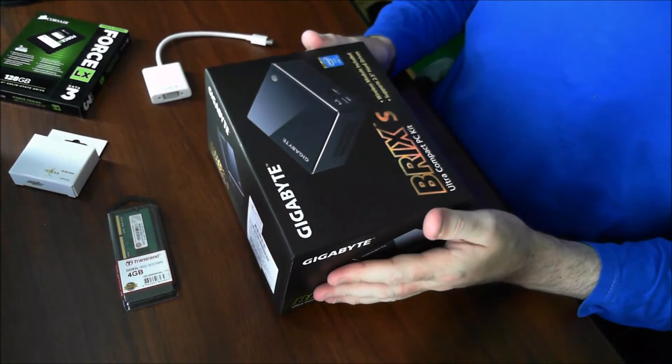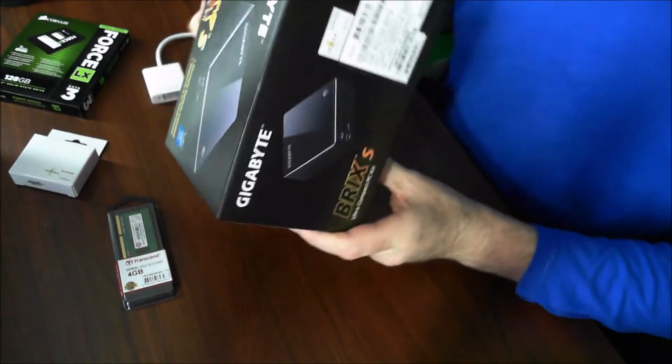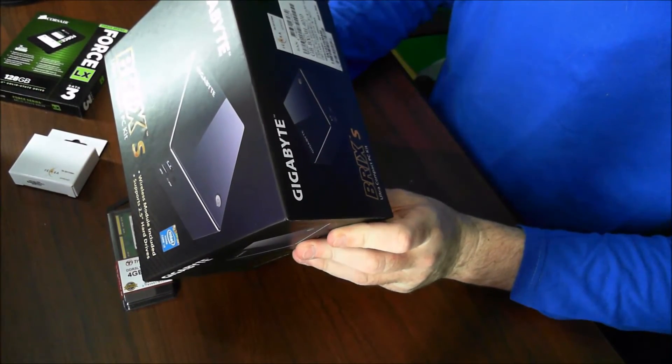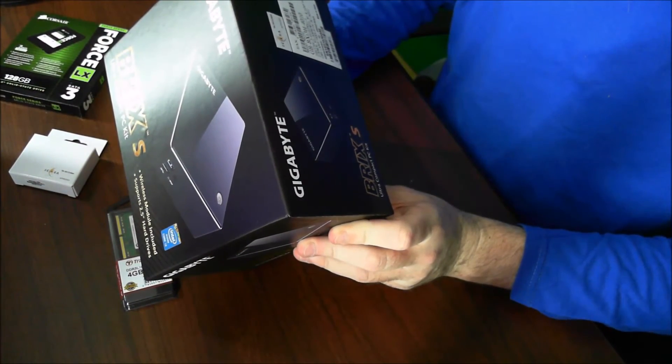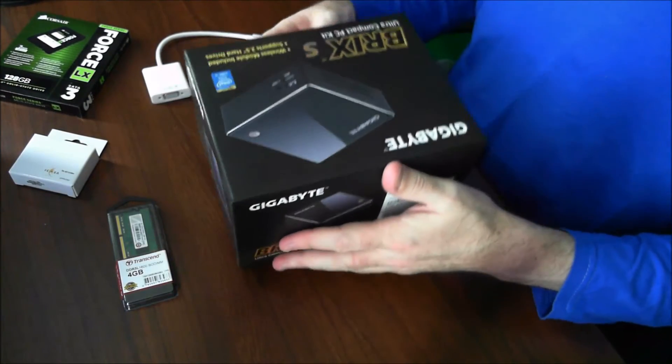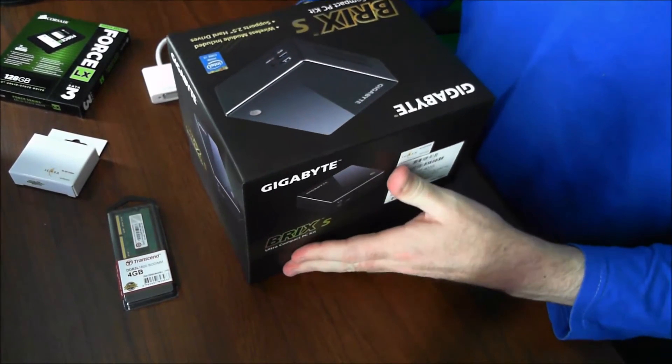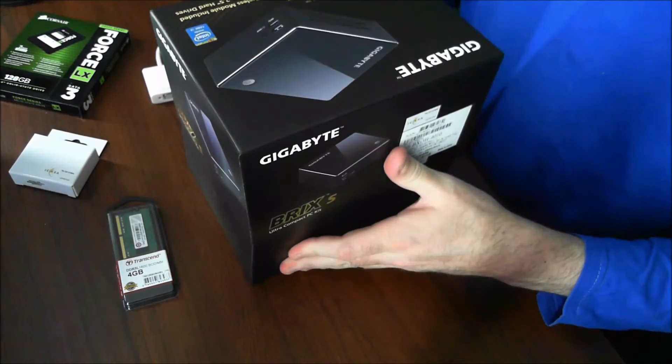It also comes with an adapter where you can basically plug this unit onto the back of a monitor. Very, very nice. The model is a GB-BX-I3H-4010U, and let's open it up and have a look what we've got here. It's got two USB ports in the front and two at the back. It comes with a traditional notebook sort of adapter.